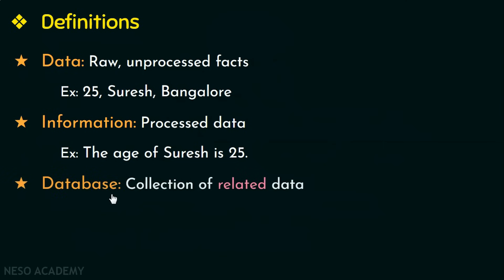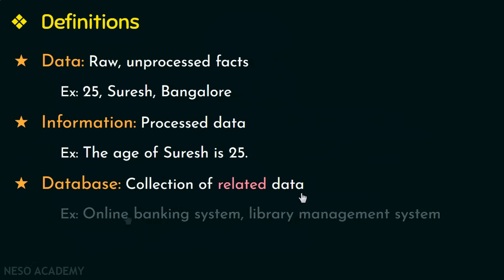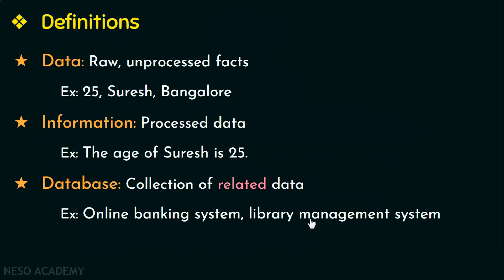Next let us see what is a database. Database is a collection of related data. A random collection of data or data that is not related cannot be referred to as a database — it has to be a collection of related data. For example, the data in an online banking system database has to be related to that particular bank. Similarly, the data in a library management system database has to be related to that particular library.